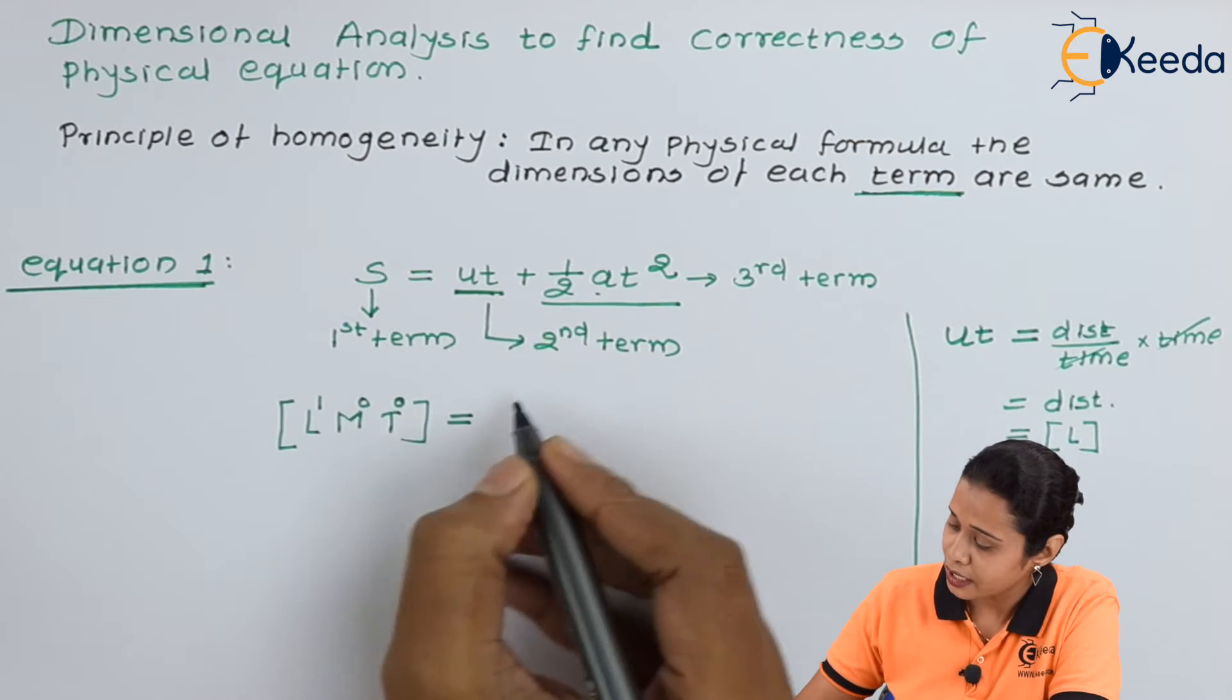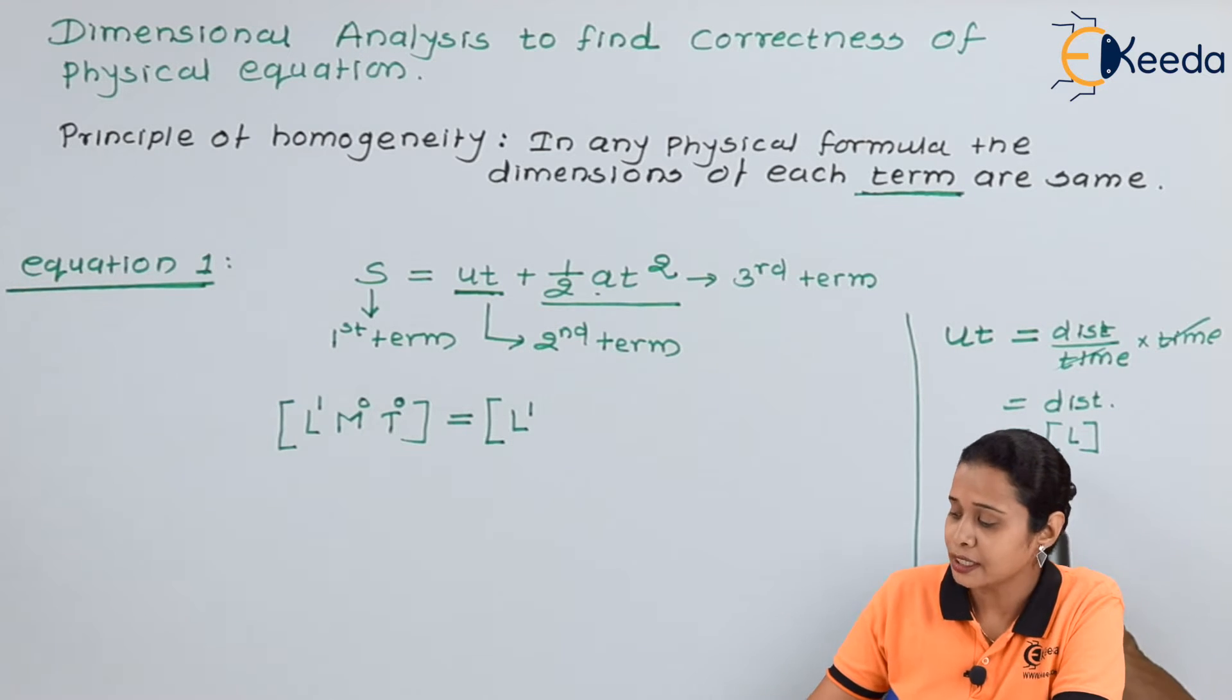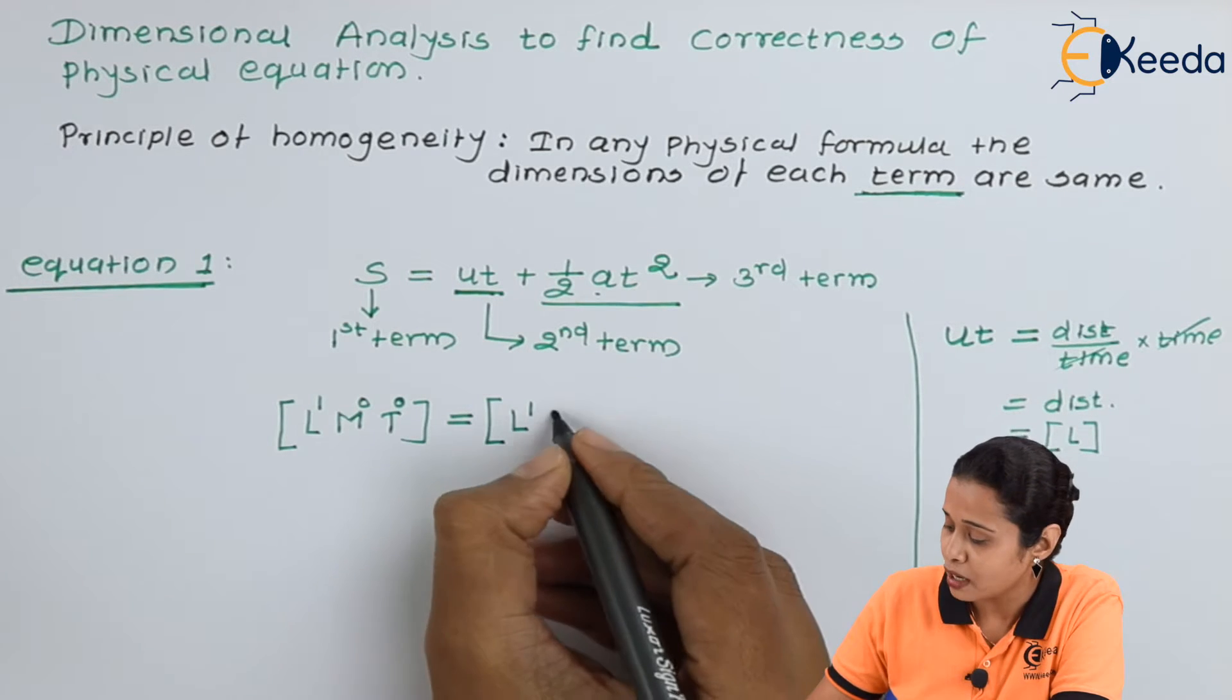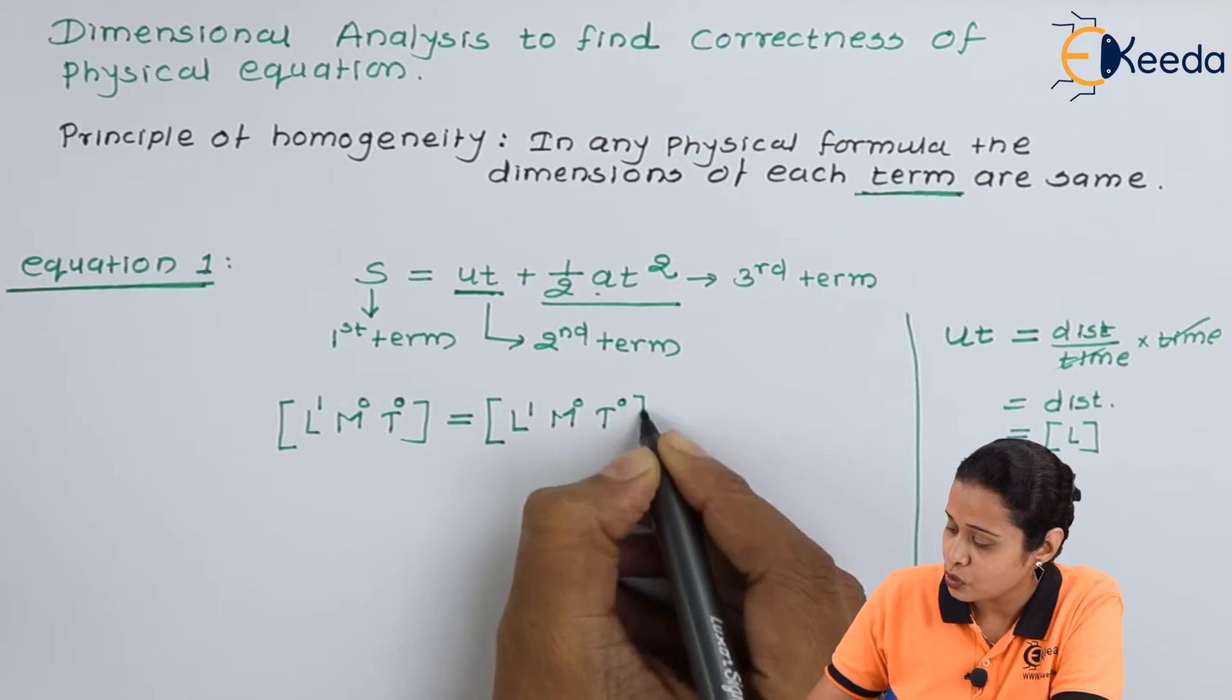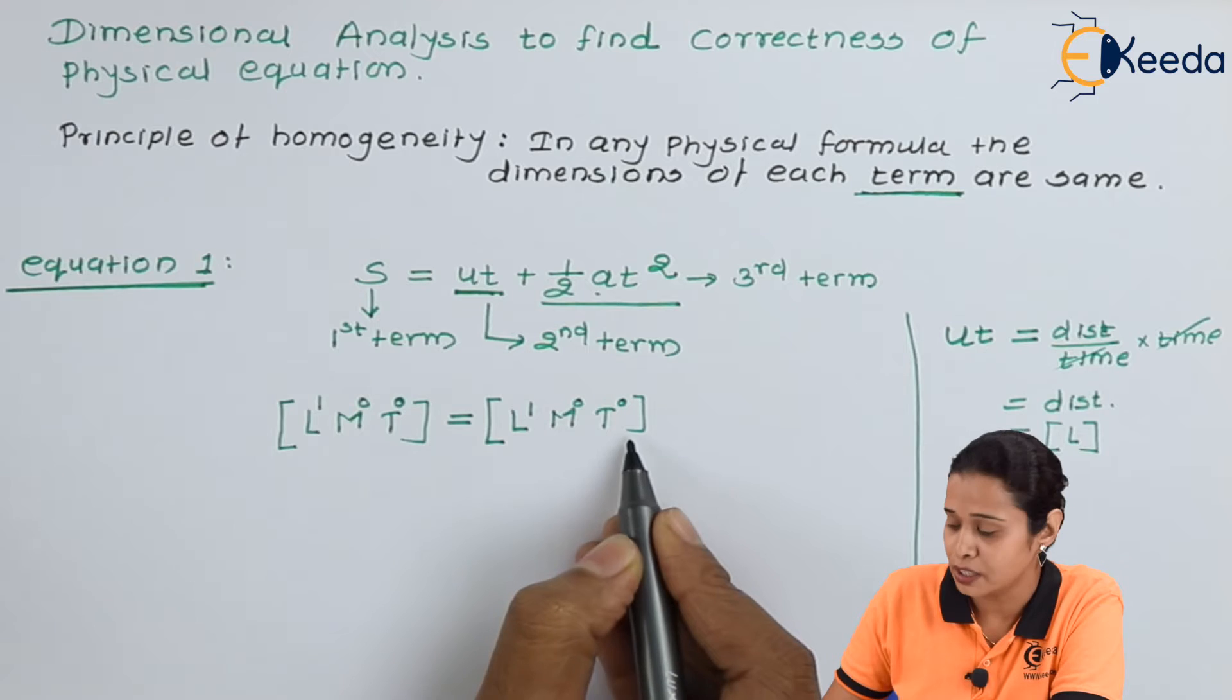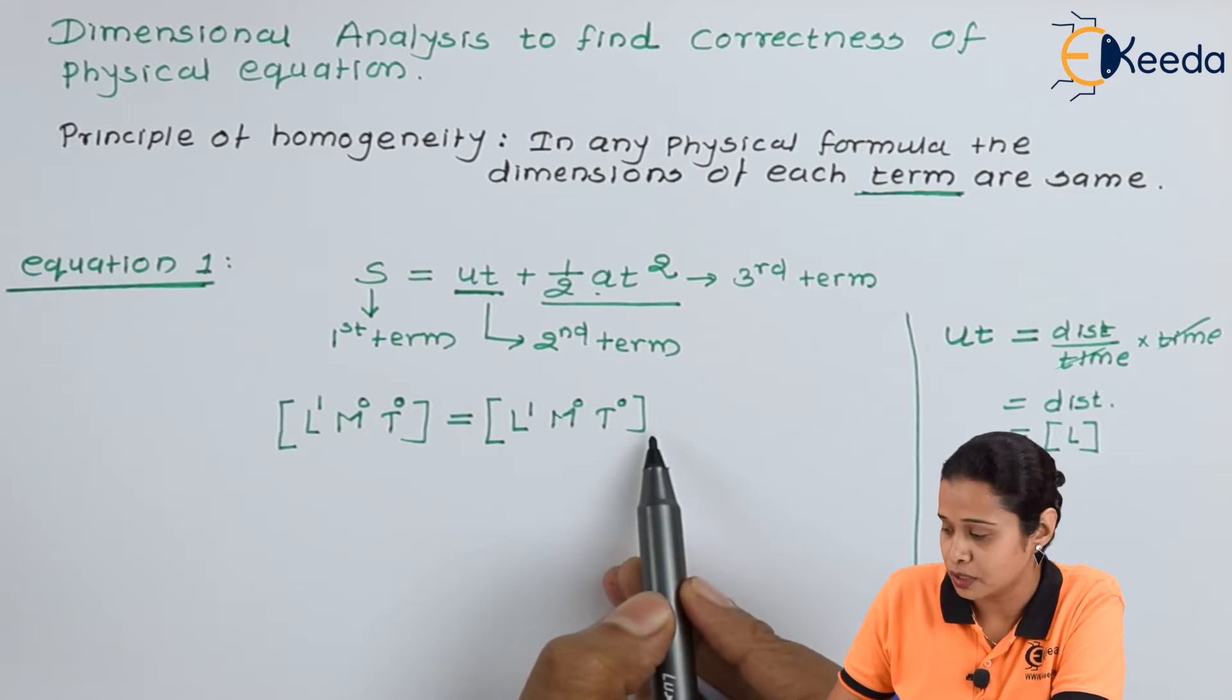Now we know the dimension of distance is L. Hence, the dimension of second term we can write L1. Again, in this term U, T, there is mass and time. Both are absent. So this will become M0, T0. The dimension of second term is L1, M0, T0.